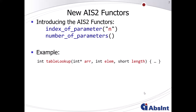We also introduce new ICE factors in this release: index of parameter and number of parameters. To explain the meanings of these factors, assume you have a C function table_lookup which you're going to analyze with the binary analyzers. This function comes with three parameters: the first is a pointer to an integer array, the second is an integer element, and the last defines the length, of type short, of this array. On a binary level, for instance in the PowerPC case, those parameters are transported via machine registers r3, r4, and r5 respectively — defined by the compiler's calling conventions.